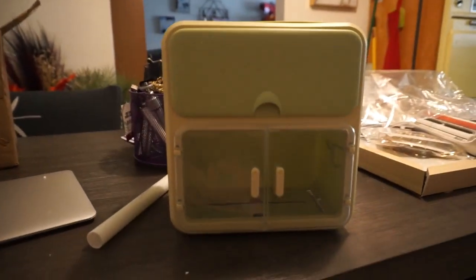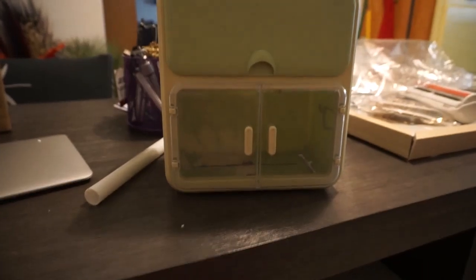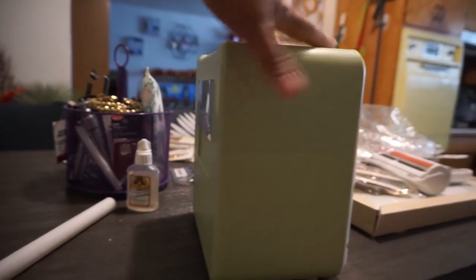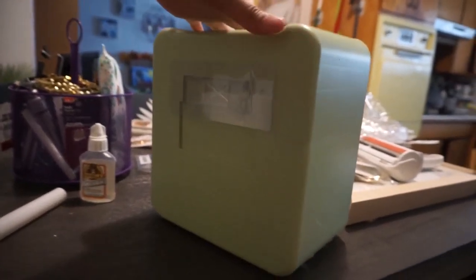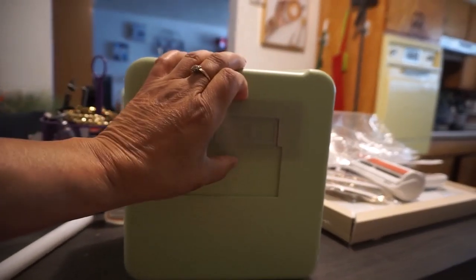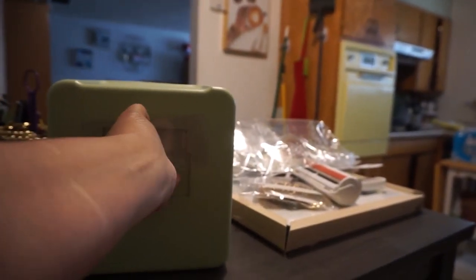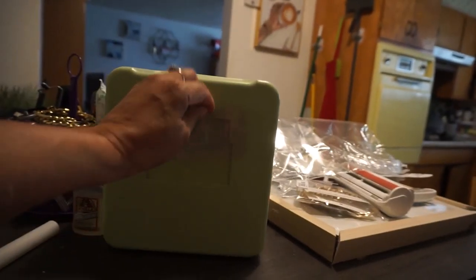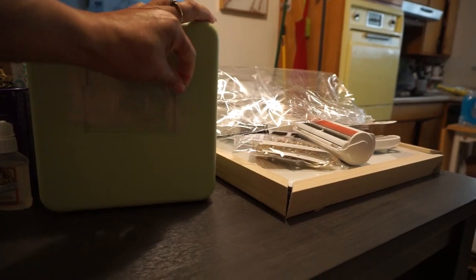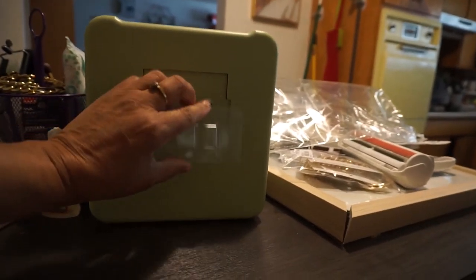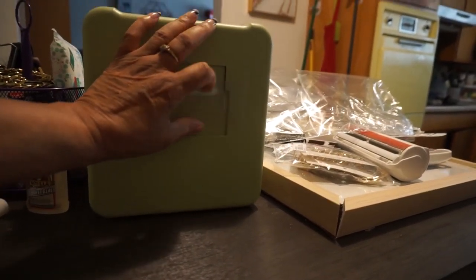Now this right here is a toilet paper holder. Let me give you a look at the specs and how it works. This piece right here was in the box. I'm using one hand here, I hate this one-hand stuff. The piece sticks on the wall, so you put it in like this and you slide it up.